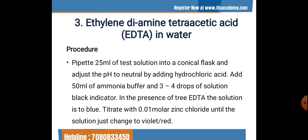The next test is the EDTA test — to detect the presence of ethylene diamine tetra-acetic acid (EDTA) in water. We pipette 25 ml of test solution into a conical flask and adjust the pH to neutral by adding hydrochloric acid. Sometimes the presence of other chemicals may interfere with readings, so we must first check and neutralize the pH of the sample before proceeding.